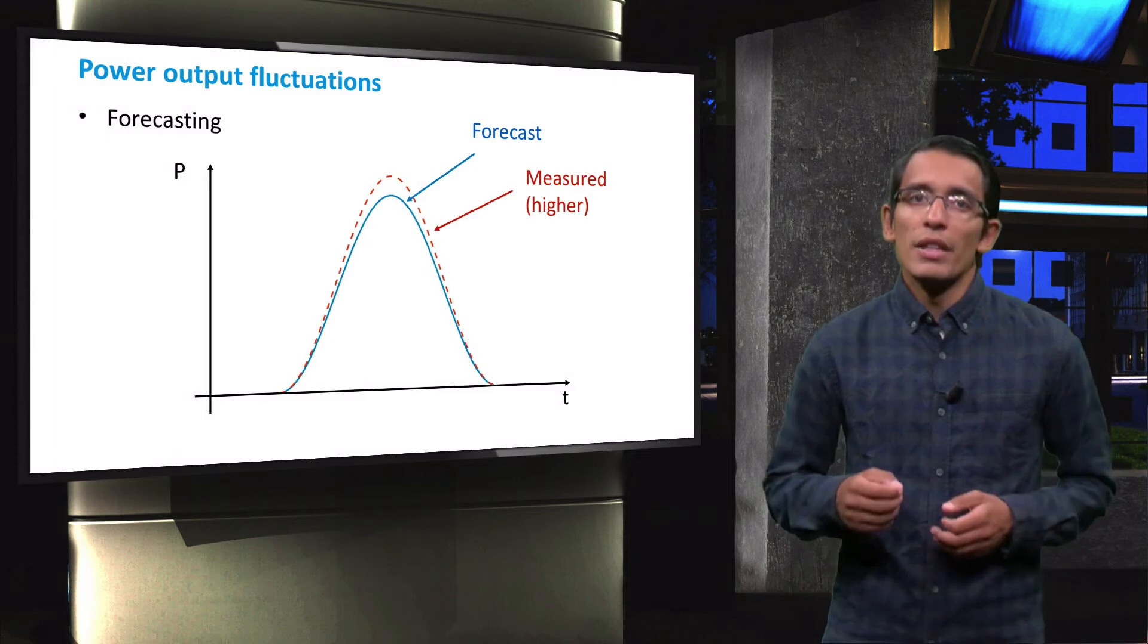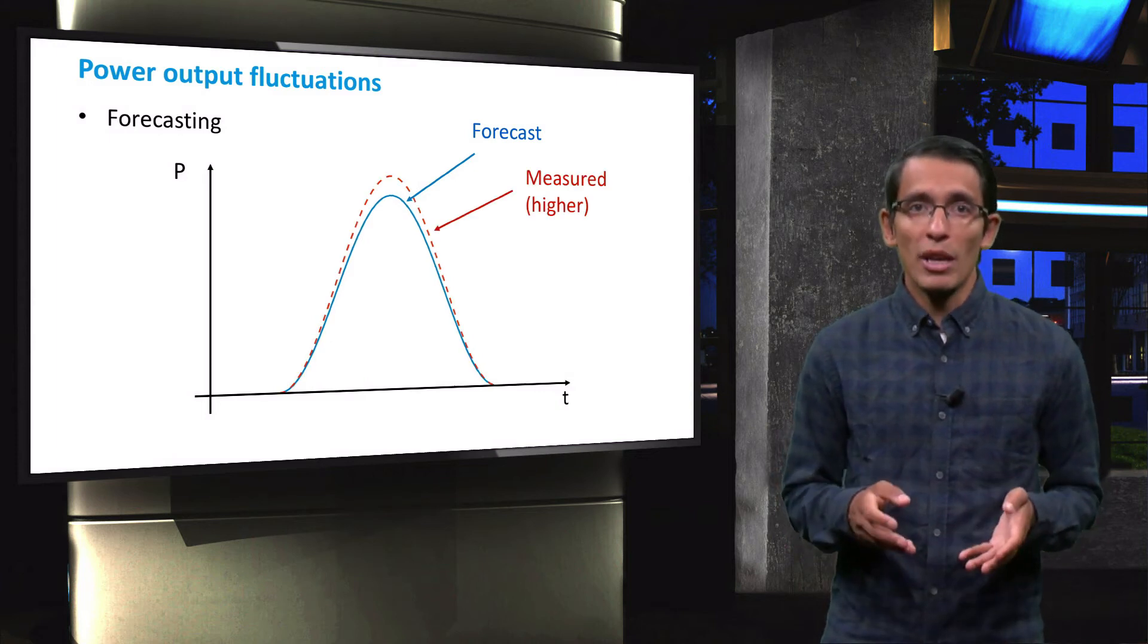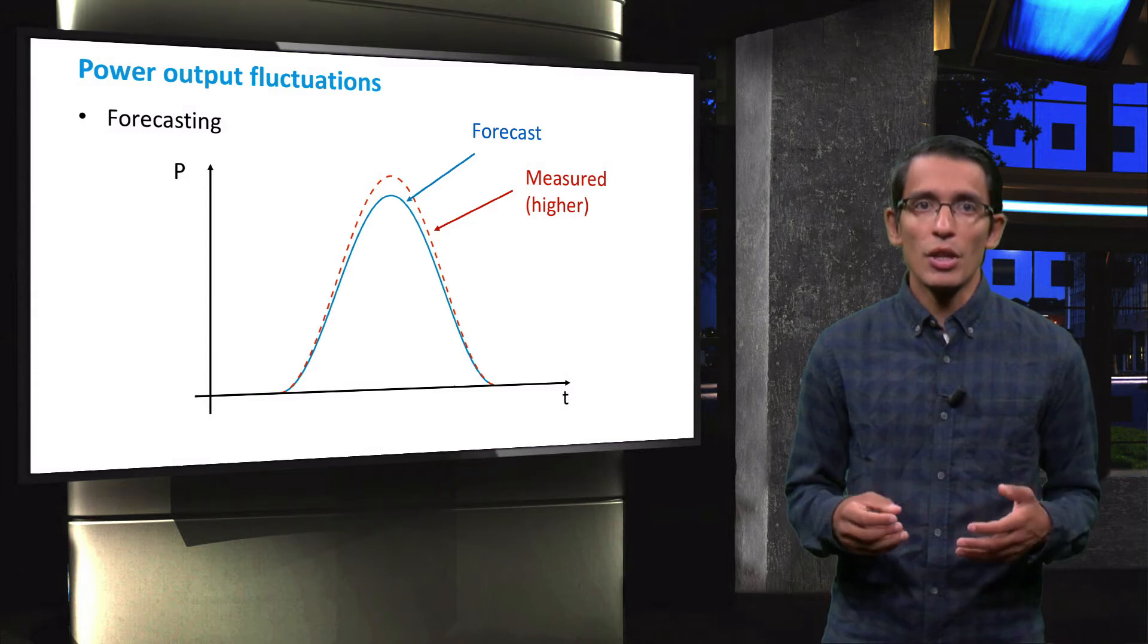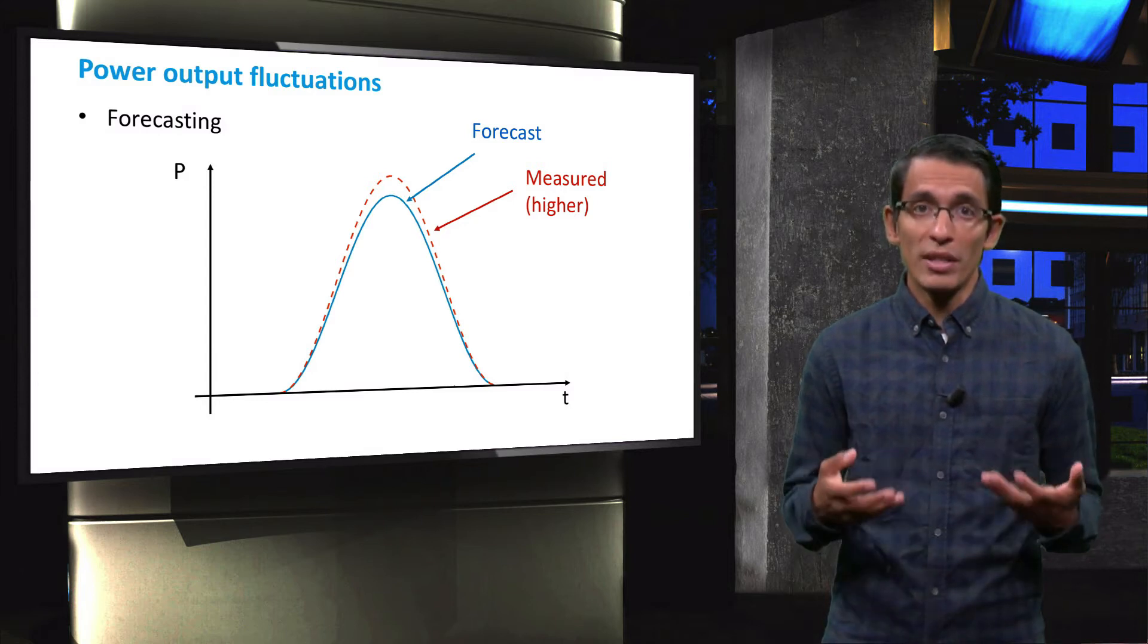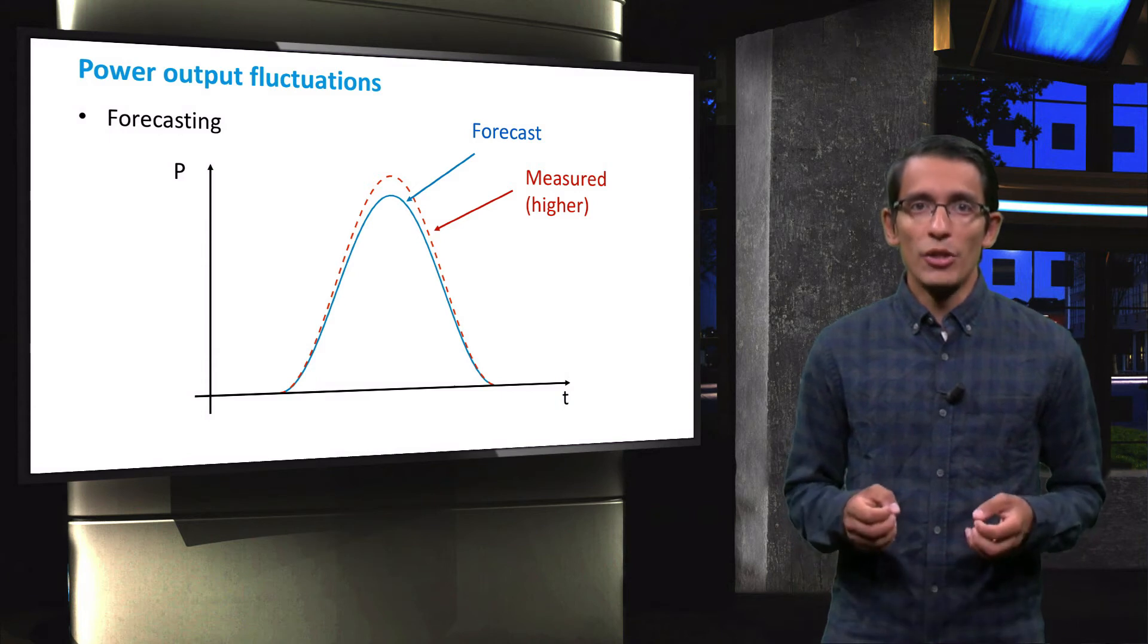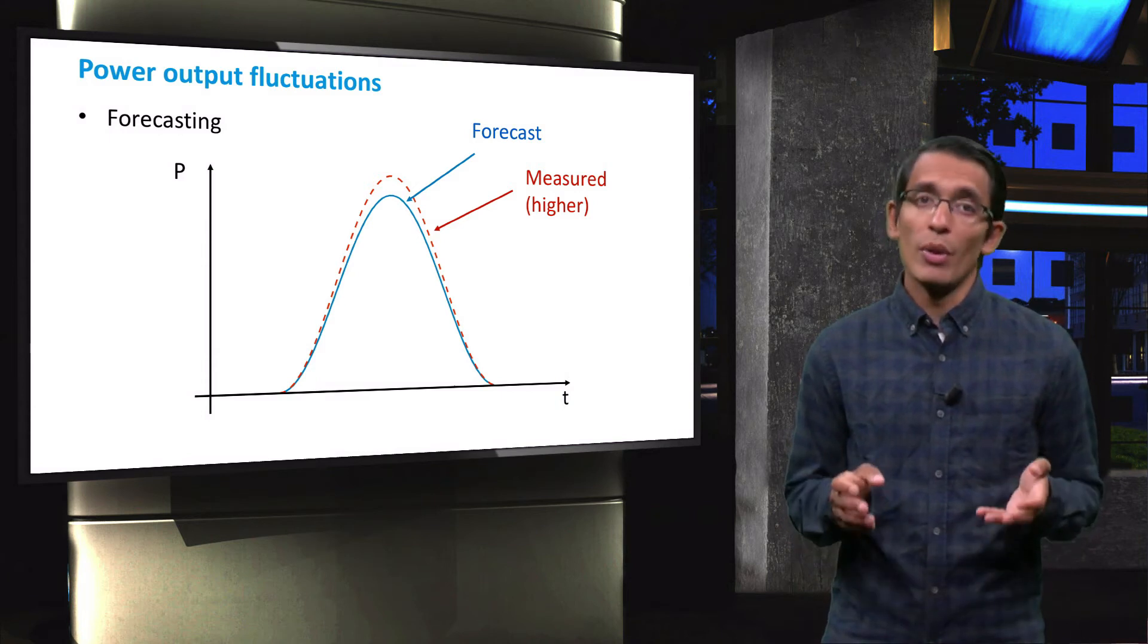Nevertheless, these forecasts may predict less power than a PV system is actually able to produce. In this case, traditional power plants are shut off to avoid a surplus of energy in the system that could cause faults or could end in wasted power. Alternatively, this excess energy can be stored if storage is integrated into the grid.